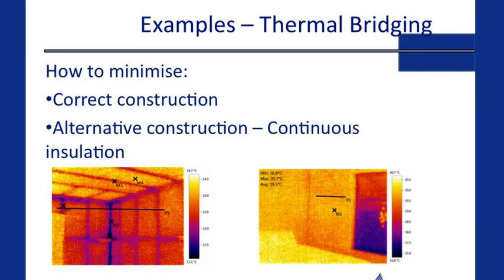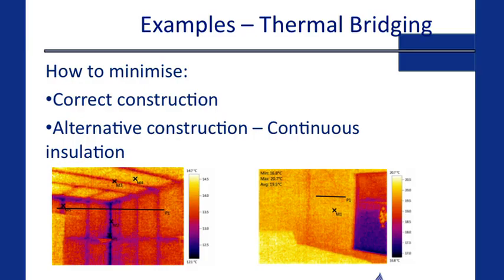Following on from Andrew's talk about thermal bridging — in the image on the left, you can see a bunch of cold dark lines. Those are the structural members of the roof and the walls. That provides the least path of resistance, so you lose a lot of heat through that wall. To avoid that, you use correct construction such as thermal brakes, or alternative constructions like continuous insulation — things like structurally insulated panels. The image on the right-hand side is of a structurally insulated panel. There are no structural members, so there's no bridging, giving you a consistent layer of insulation which also provides a consistent air barrier.